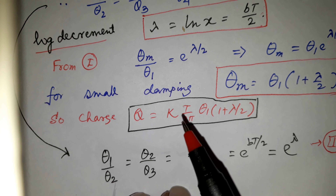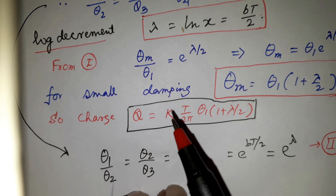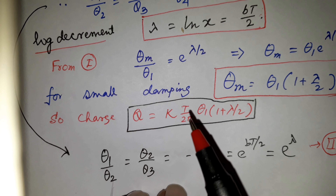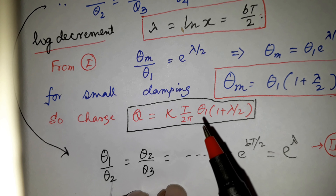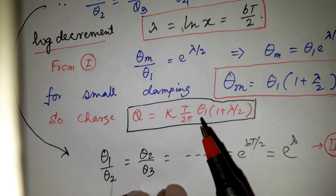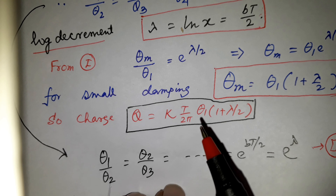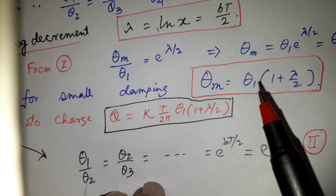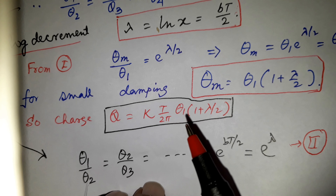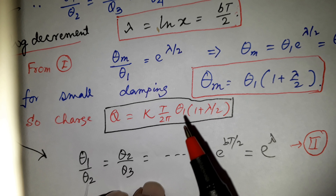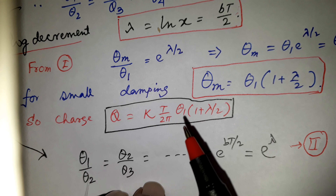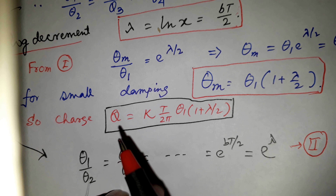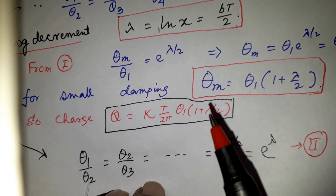The charge formula q equals (C/NH) times (T/2π) times theta_m, but the actual theta is theta_1 times (1 plus lambda/2) instead of theta_m. Theta_m is the ballistic throw without damping, but there is damping, so the corrected formula for q is used with the damping correction.